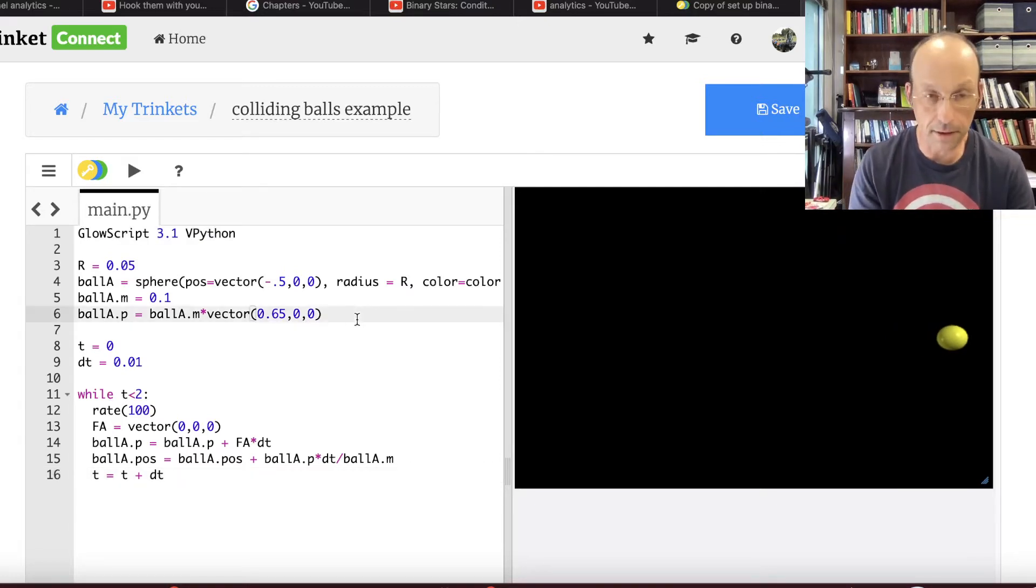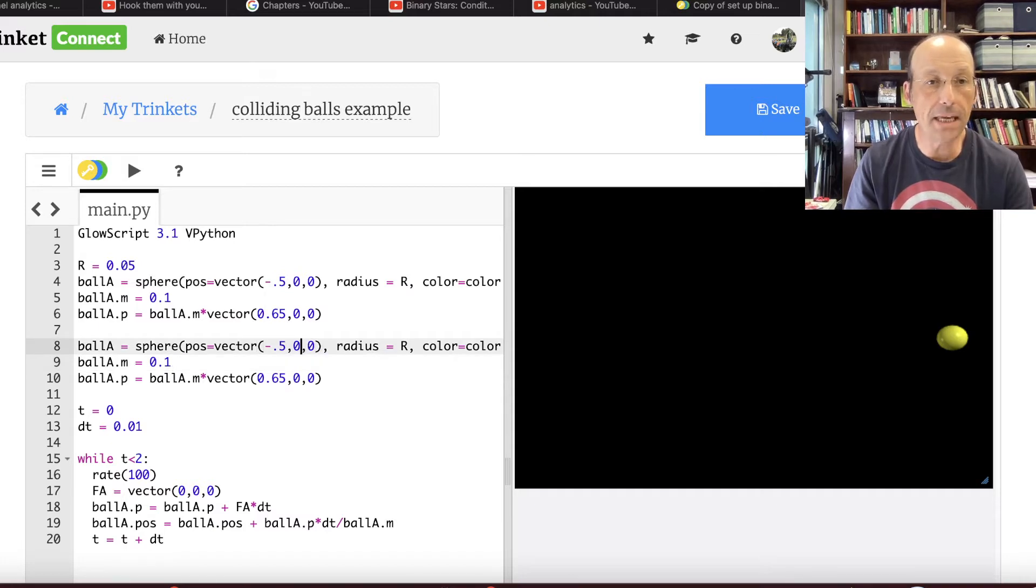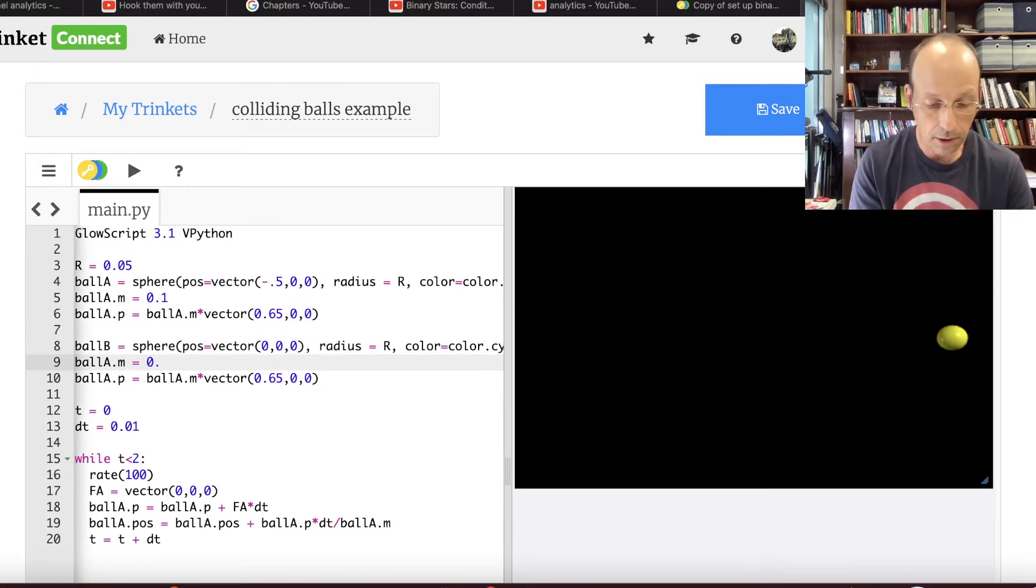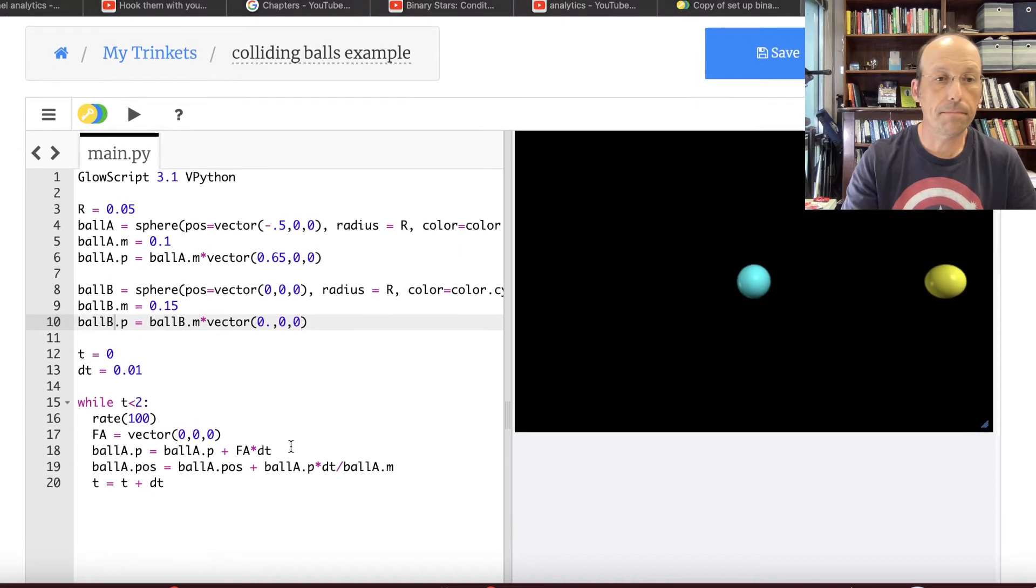Now I'm going to put the other ball in there. So let's make another ball. Actually, I just copy all this stuff. And now, so ball B is going to be at the origin and it's going to be stationary. And it's not going to be yellow because I want to be able to see them apart. It's going to be cyan. I find that yellow and cyan show up really well at the black background. It's going to have a different mass. Let's say it's 0.15 and it's not moving. So it has a vector 0, 0, 0 and this is ball B. Let's see, I've got to change that to B, change that to B, change that to B. Let's see if that runs. Okay. That's good.